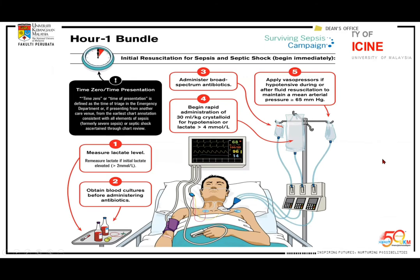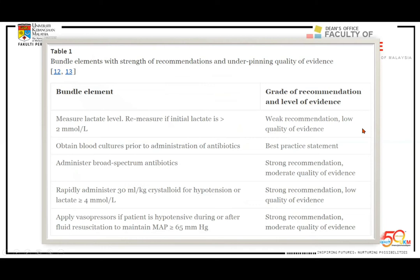The Hour-1 Bundle consists of five steps. First: measure the lactate level — if more than 2, initiate the whole bundle. Patients need antibiotics started within 45 minutes of sepsis diagnosis, after taking a blood culture. We suggest empirical antibiotics immediately. Also, administer 30 mL/kg of crystalloid for those with hypotension or lactate more than 4, then consider vasopressors for hypotension. The recommendation to measure lactate is a big recommendation but low-quality evidence. Obtaining blood cultures is a best practice statement. Administration of broad-spectrum antibiotics is a strong recommendation.